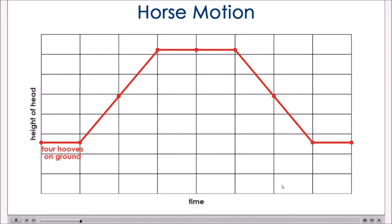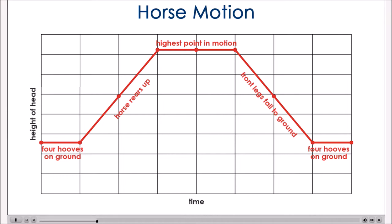Perhaps the red motion graph better represents the motion of the horse's head and chest — it indicates that the horse moved up, remained at the top of its motion for a time, and then fell back down to the ground. Notice that the horizontal axis of this motion graph is time, but if we wanted to create a cam to produce this motion repetitively as we turn a crank, we could use the same graph shape but use cam rotation as the independent variable.